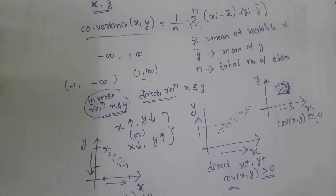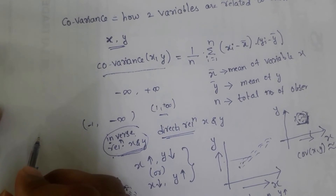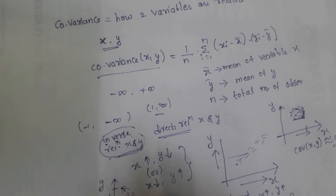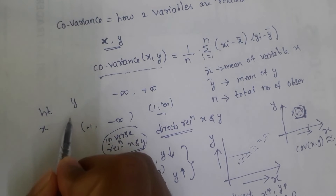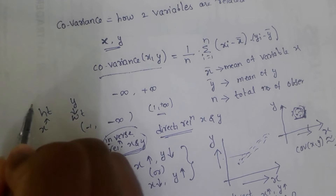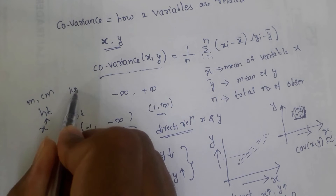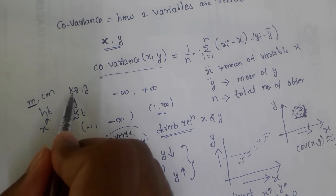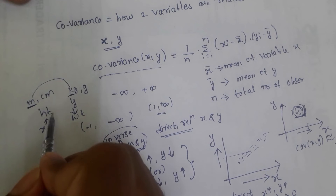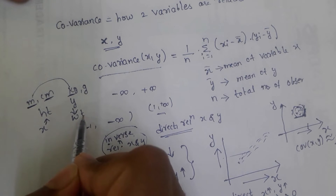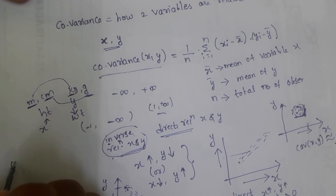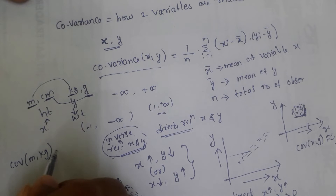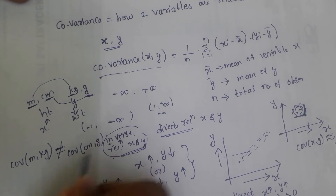The limitation of covariance is that if the magnitude or units of the variables change, the covariance value also changes. For example, suppose we measure height and weight. If we measure height in cm and weight in kg, then calculate covariance, it will not be equal to the covariance of height in meters and weight in grams. So covariance(x in meters, y in kg) need not equal covariance(x in cm, y in grams). This is the limitation.